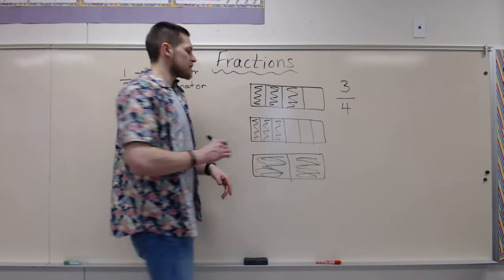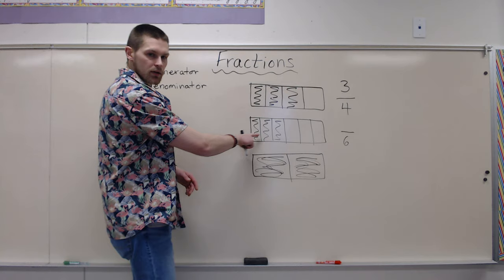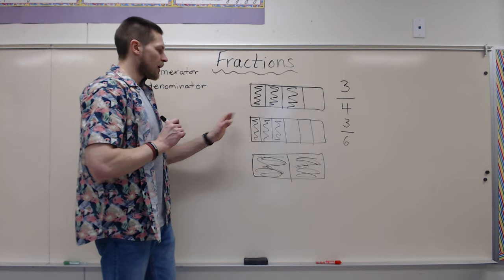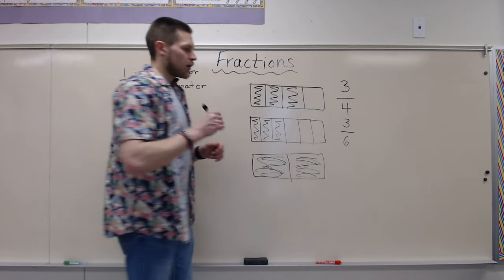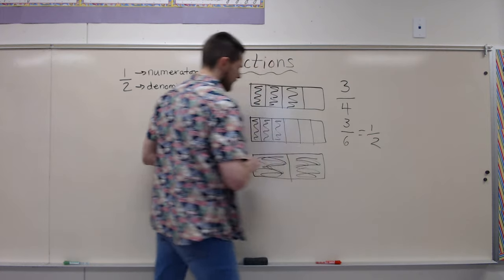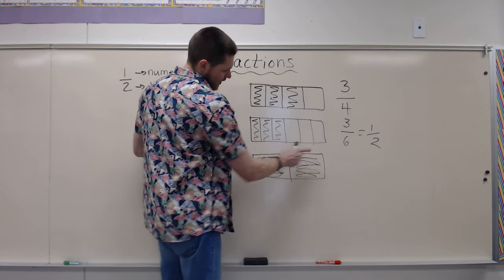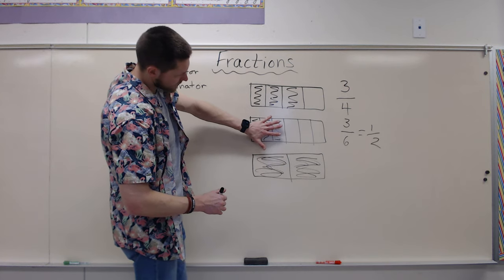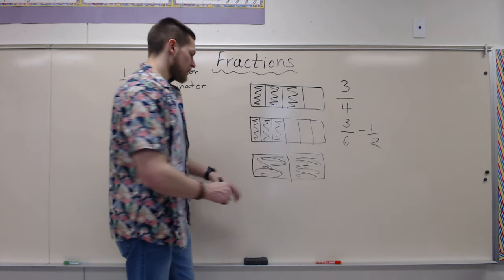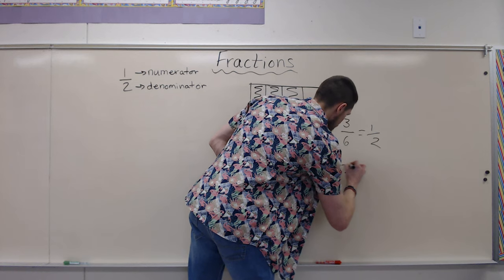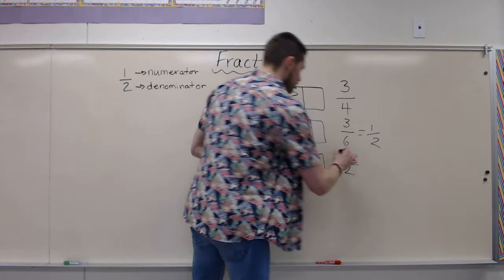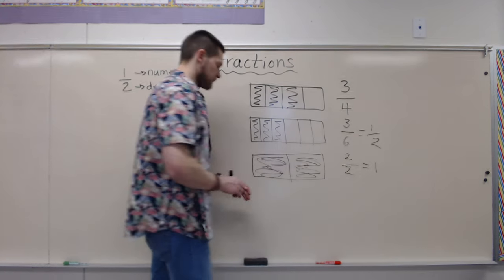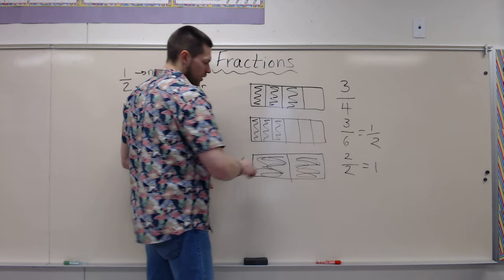Our next one: we split this up into six equal pieces. We count the shaded amount — one, two, three. We have three-sixths. We shaded in three out of the six total pieces. Three-sixths is actually equal to one-half — we have three pieces here, three pieces here, as you can see in our bottom one. Last one: we have two equal pieces, which goes on the bottom. How many do I have shaded in? One, two. We have two-halves, which is equal to one whole — we shaded in the entire bar.